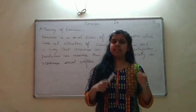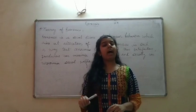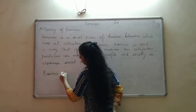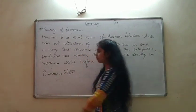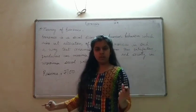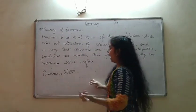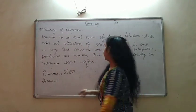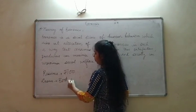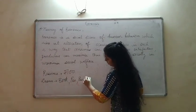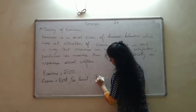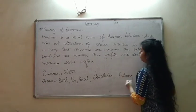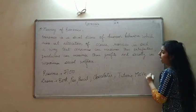Economics is a social science of human behaviour. For example, let's take the example of a student. If I have 100 rupees, my resource here is 100 rupees. I have 100 rupees, so my resource is 100 rupees and I have different desires. My desire is that I want a book, I want a pen, I want a pencil, I want chocolates, I want to join tuitions, I want to see a movie, and so on.